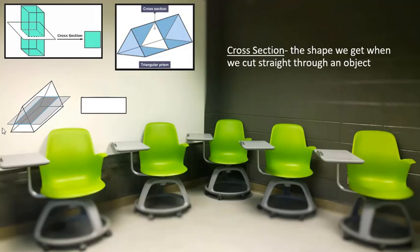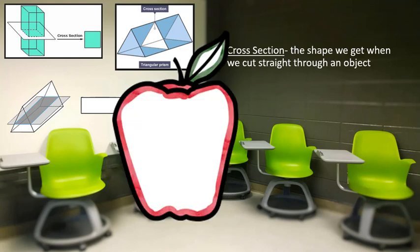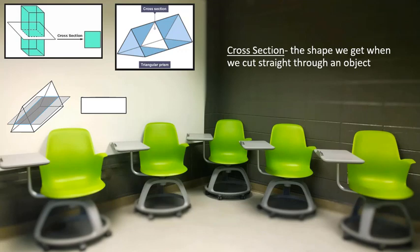Alright, now let's talk about what is a cross section. If we were to take a polyhedra, or a three-dimensional solid, and slice through it - you could think about cutting through an apple or some fruit - you get the idea.